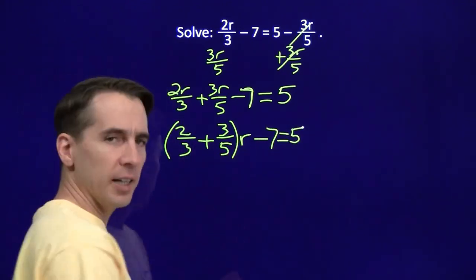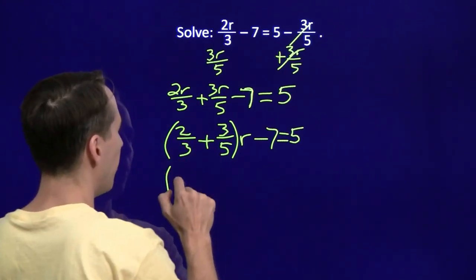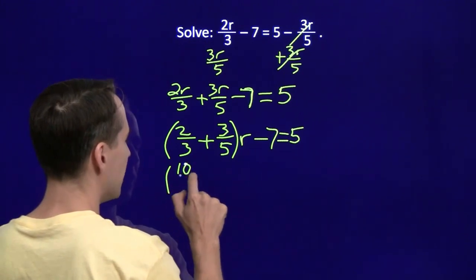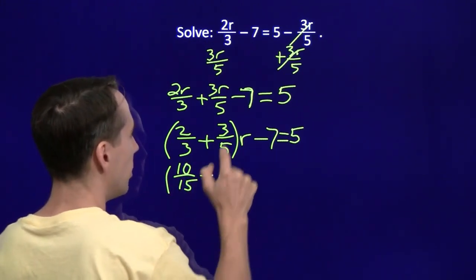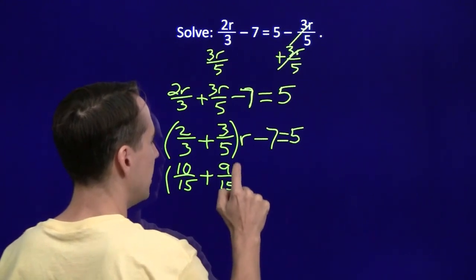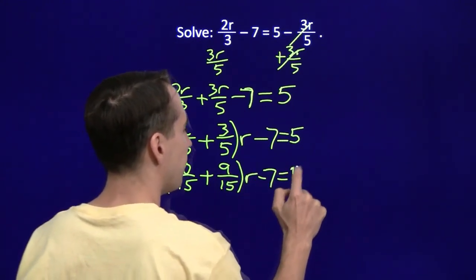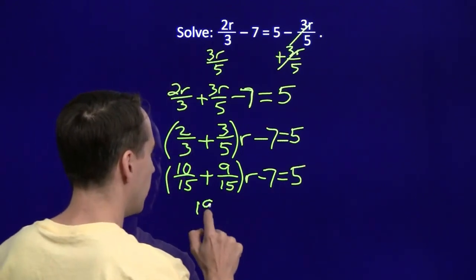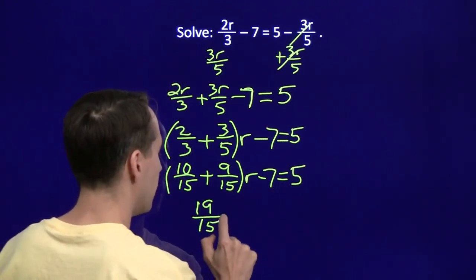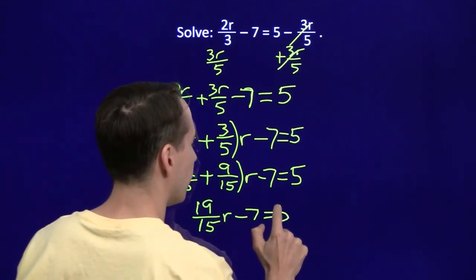We add these by finding a common denominator. Common denominator is 15. So we multiply top and bottom of 2 thirds by 5 and we have 10 fifteenths. Multiply top and bottom of 3 fifths by 3 plus 9 fifteenths. R minus 7 equals 5. We add those up, we get 19 fifteenths times r minus 7 equals 5.